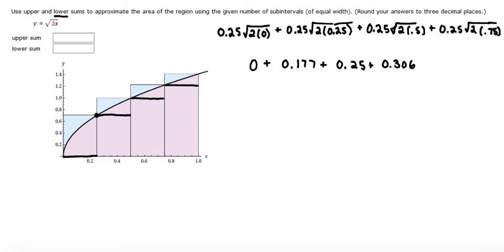So then we can add all those together: 0.177 plus 0.25 plus 0.306 is 0.733, which would be our final answer for the lower sum.